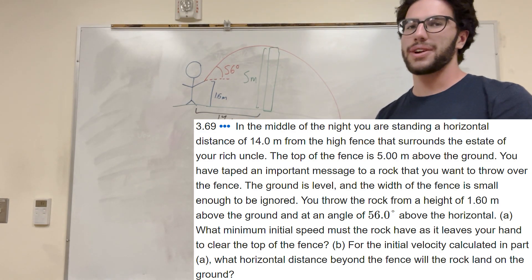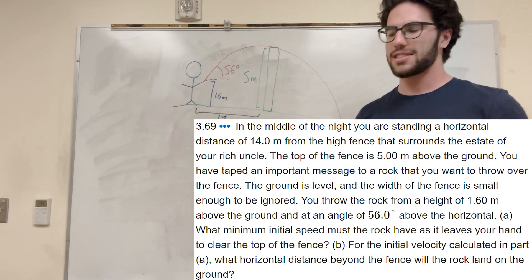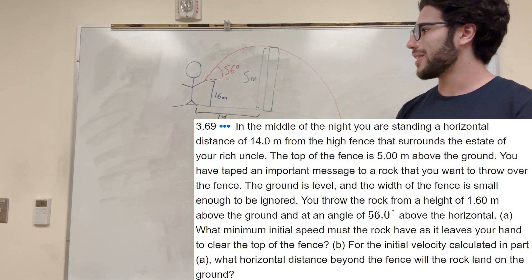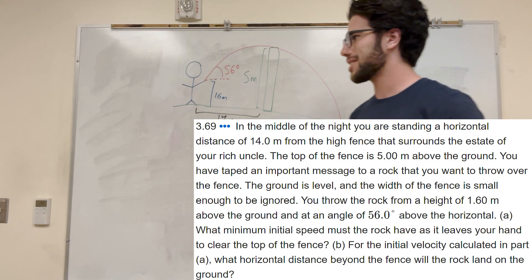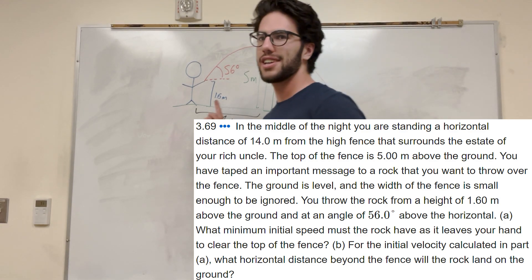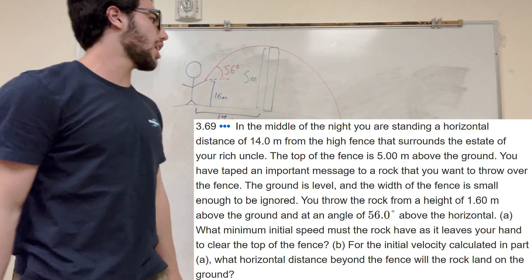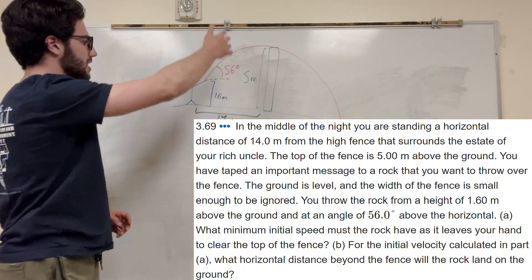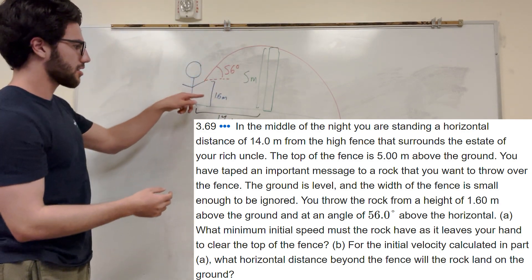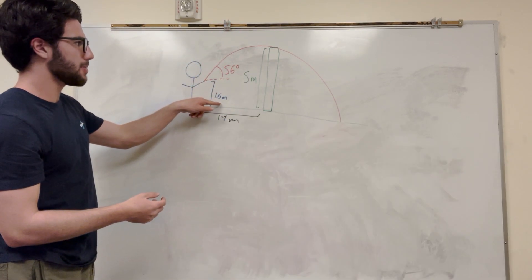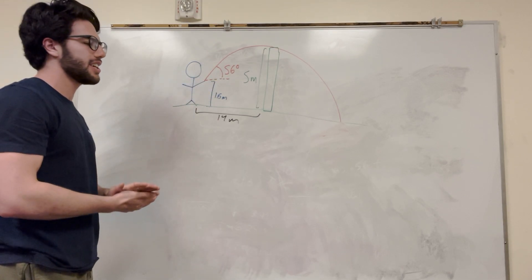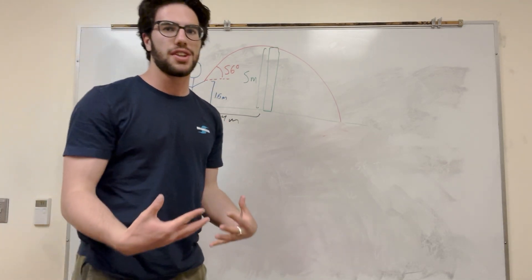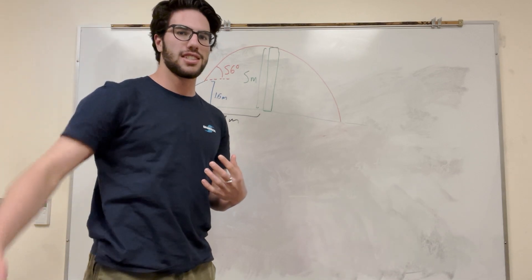What's up Cal Gang? So we got this projectile motion question. I'll go ahead and explain it to you really quick. So you got this person, and you're trying to throw this rock over the fence. You're 14 meters away from the 5-foot fence, and you're throwing it from 1.6 meters off the ground at an angle of 56 degrees. You're trying to find what's that initial velocity that you need to get it over the fence.